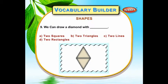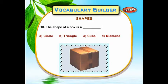We can draw a diamond with two triangles. The shape of a box is a cube.